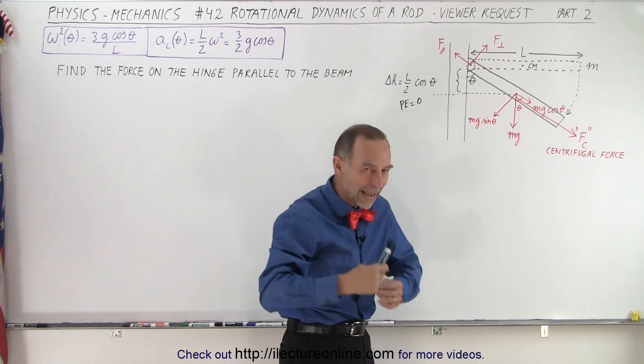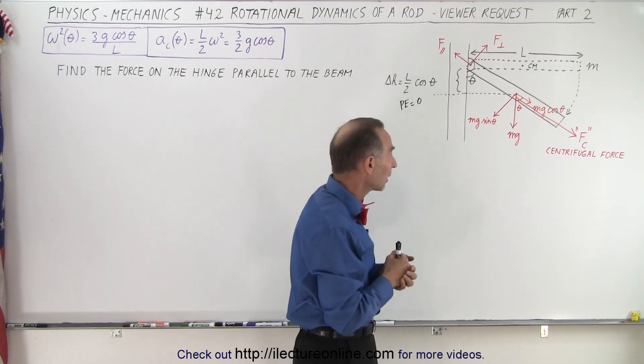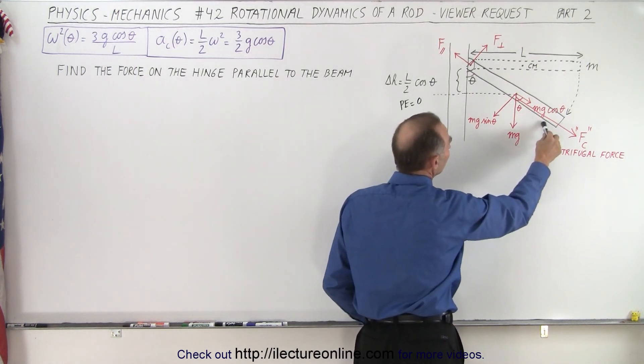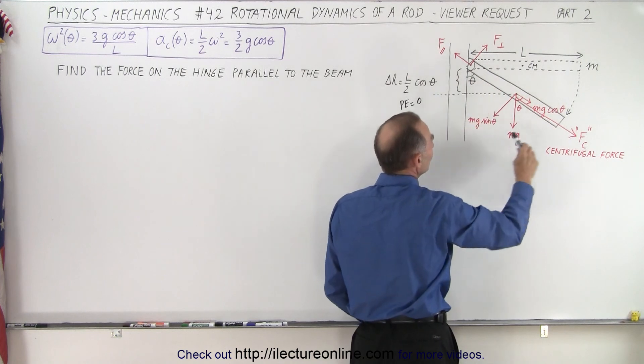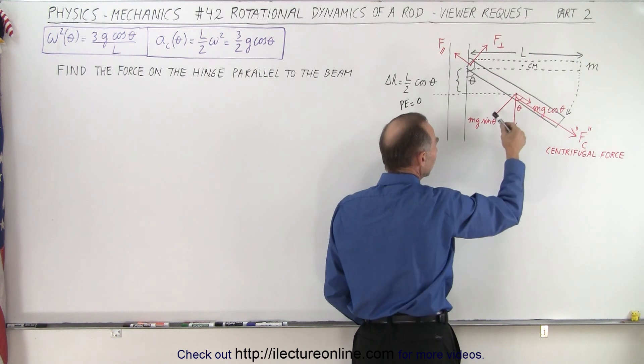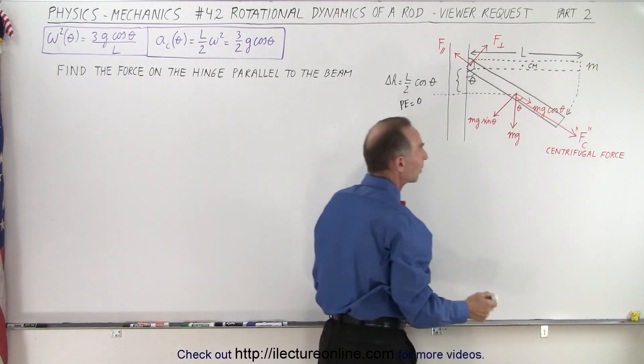which then gives us the parallel and perpendicular component. Now we need to be careful here because the angles are kind of in reverse when it comes to like an inclined plane. Normally we deal with the angle over here but now we have the angle over here which means that the parallel component is Mg cosine theta and the perpendicular component is Mg sine theta because we're not using the other angle up here.